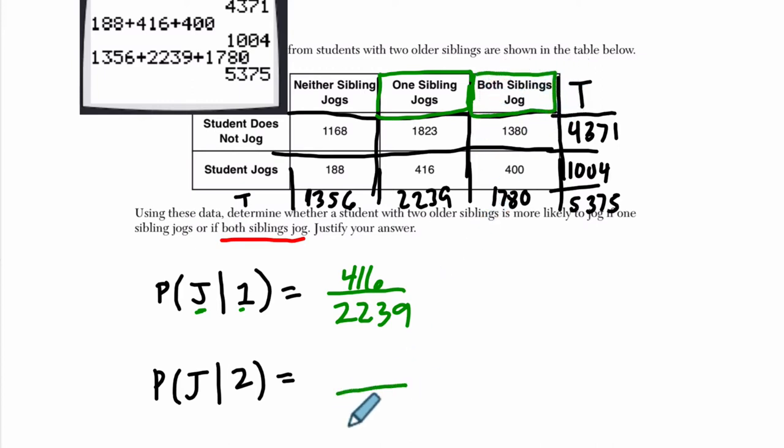Then you repeat the process for both siblings jogging, where there's 1,780 students who have two siblings that jog, and out of them there are 400 who jog. Now at first glance you might say, well, 400 is smaller than 416, but they're different proportions. So here, this is about 0.225, and this is about 0.186.